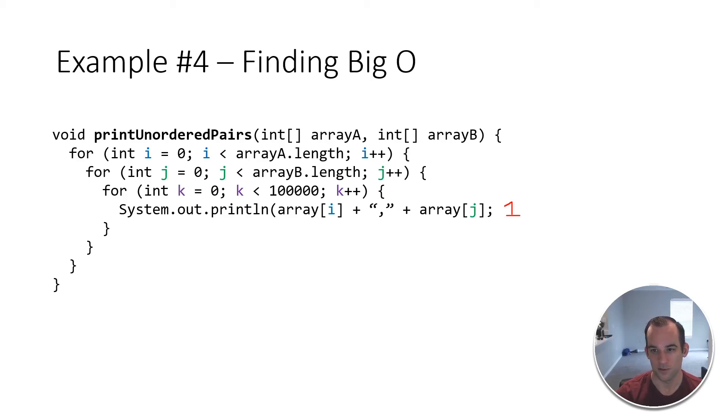Just like last time in the last example, the first loop is going through the first array from zero to the length, so that's Big O of N. The second loop is going from the beginning of the array to the length of the second array, so that's Big O of M.